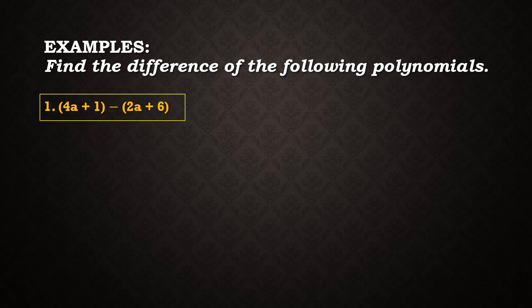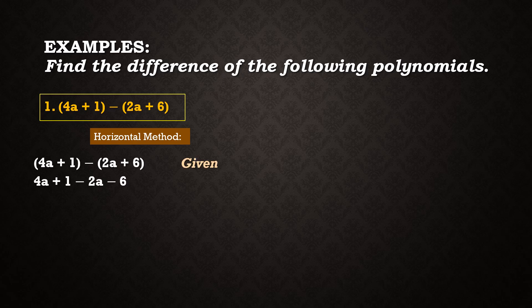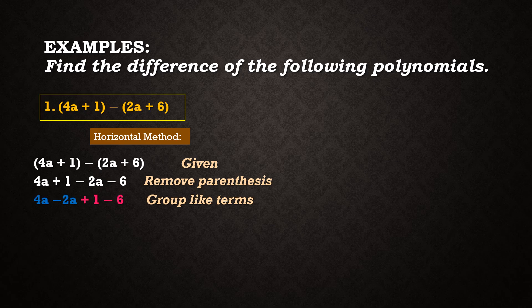Example 1: we are going to subtract the quantity 4a plus 1 minus the quantity 2a plus 6. For the horizontal method, we write the given, then remove the parentheses, then group like terms. So we have 4a minus 2a, and positive 1 and negative 6 together. After that, we apply the operation: 4a minus 2a is equal to 2a, and 1 minus 6 is equal to negative 5. Since we cannot combine 2a and negative 5, our final answer is 2a minus 5.